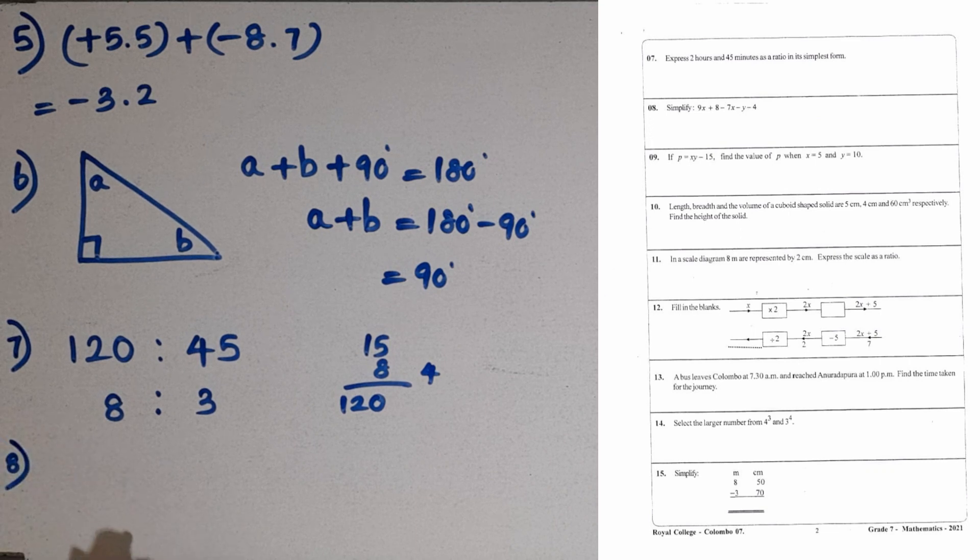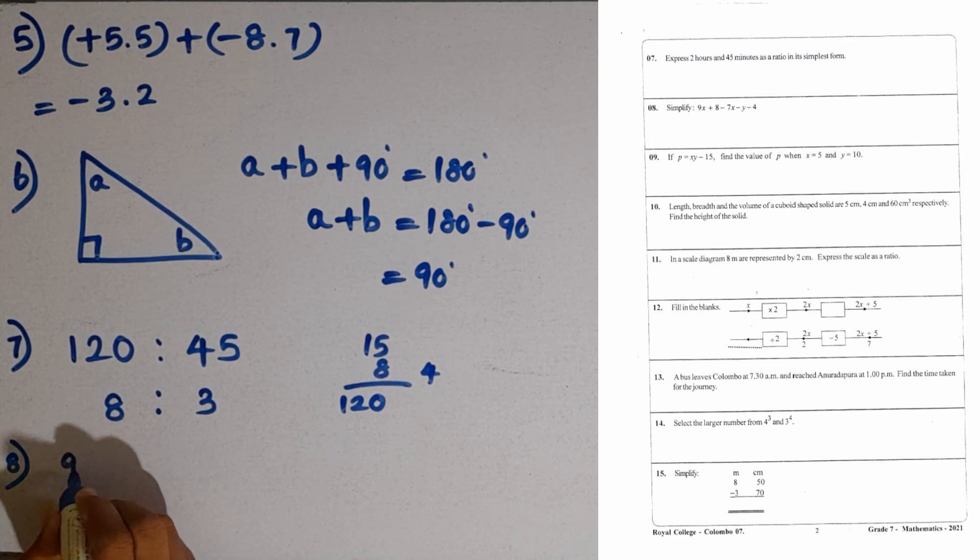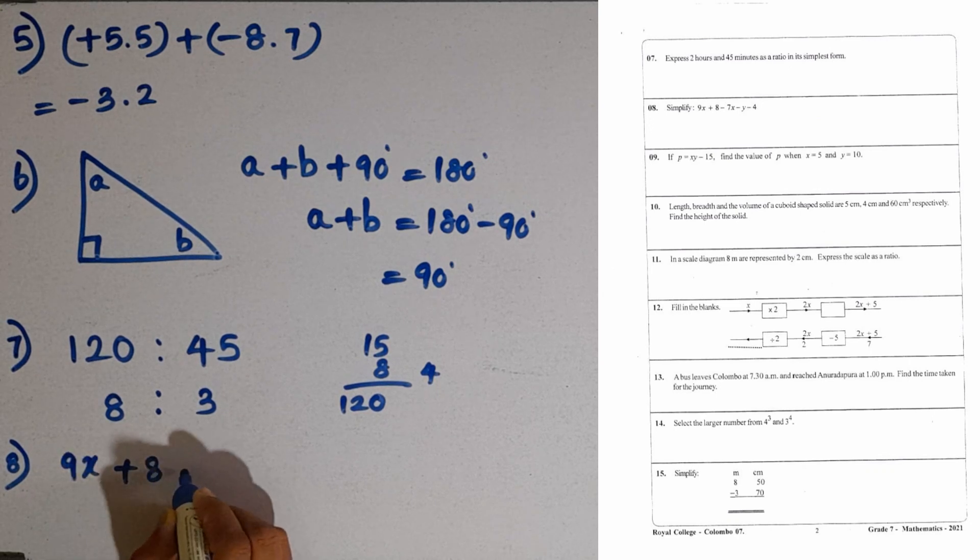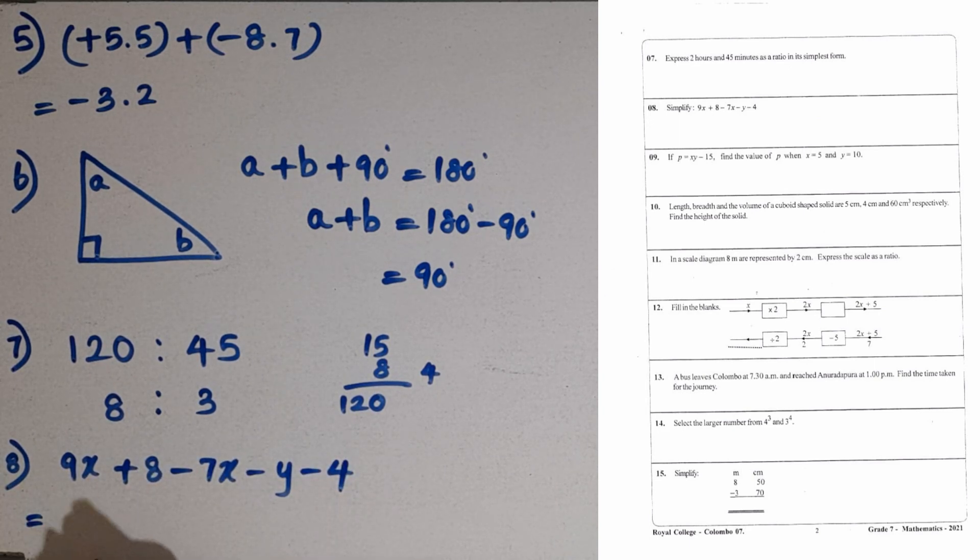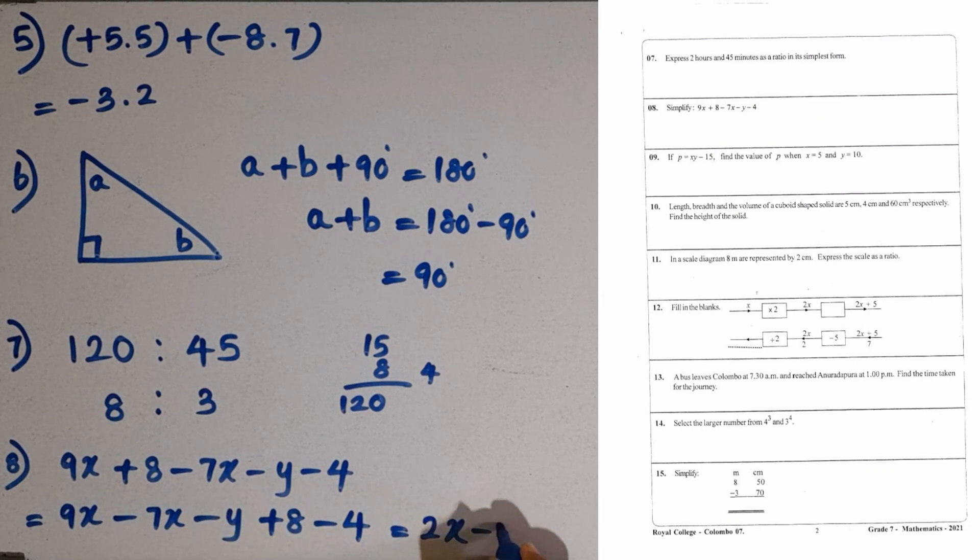Then question number 8. We are given to simplify this one. 9x plus 8 minus 7x minus y minus 4. First, we have to take the like terms together. 9x with minus 7x, then minus y, then plus 8 minus 4. You can simplify these two like terms. 9x minus 7x is 2x. 2x minus y, then plus 8 minus 4 is plus 4. So, this one is the correct answer.